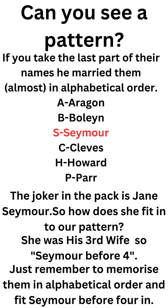The joker in the pack is Jane Seymour. So how does she fit into our pattern? She was his third wife, so: Seymour before 4. Just remember to memorize them in alphabetical order, and fit Seymour before 4.